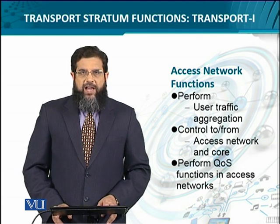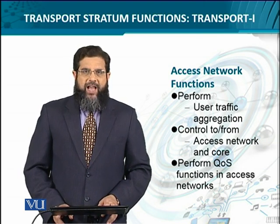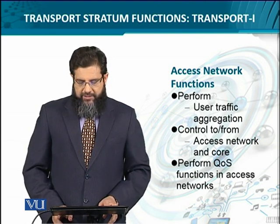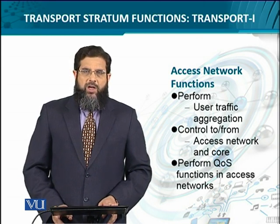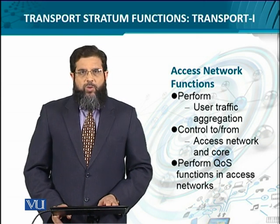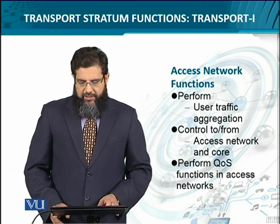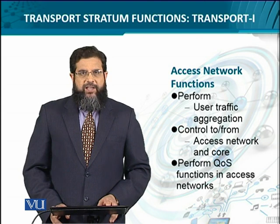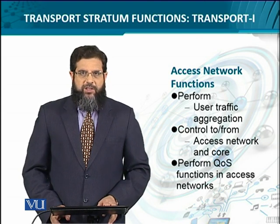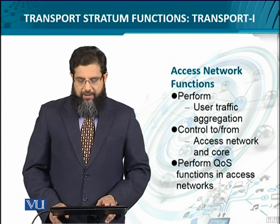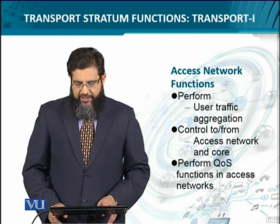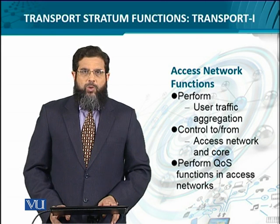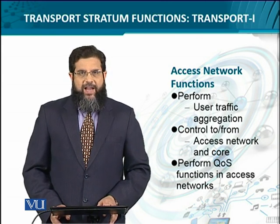The access network functions include all aspects related to the user side. This includes user traffic aggregation — picking up user streams coming from individual user equipment and aggregating them onto a single pipe. It also includes the access mechanism, that is, control of connectivity between the access network and the core network. Together with traffic aggregation, this is executed under the umbrella of QoS, meaning the access network functions include implementation of quality of service on the access side.